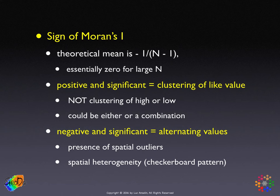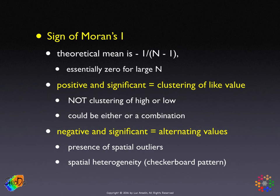Let's start with the sign of Moran's I and what it means. The theoretical mean is not 0, but a little bit to the negative of 0: minus 1 over n minus 1. For large data sets this is, for all practical purposes, 0, but for small data sets it's not. When we get a positive — technically larger than minus 1 over n minus 1 — and significant Moran's I, this implies clustering of like values. It does not imply clustering of particularly high or particularly low values, because it could be either or some combination.